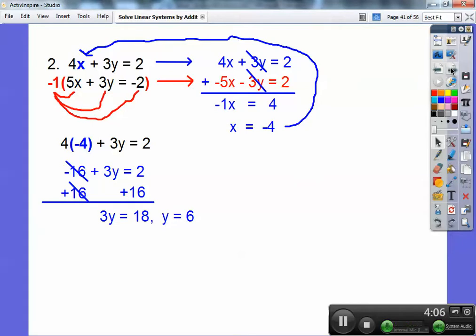So we get y equals 6. Good morning, Xavier. And then so, remember, your ordered pair is x comma y. So you get negative 4 comma 6.